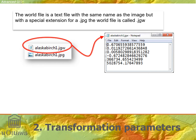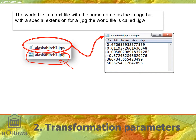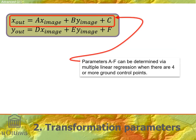Once the parameters a through f are estimated — either by an exact estimation or through linear regression — they're stored in a world file that goes along with the image. ArcGIS Pro knows to look at that world file. It doesn't change any of the column and row coordinates in the original image but simply tells ArcGIS how to translate them from column and row into x and y coordinates in the real world system. If we have more than three control points — four or more — then we get the parameters a through f by using multiple linear regression.